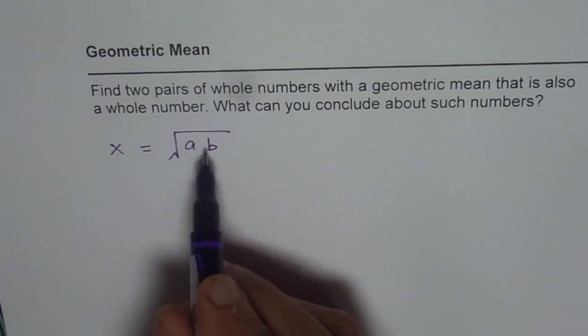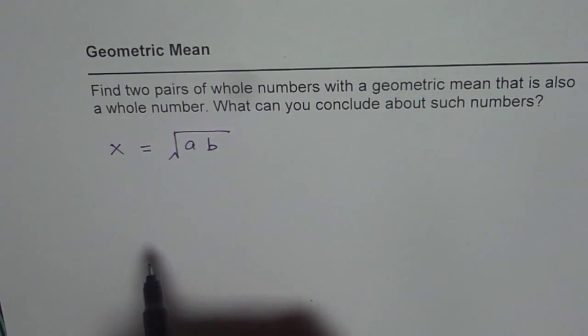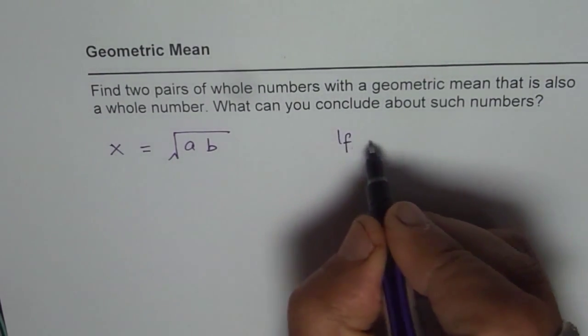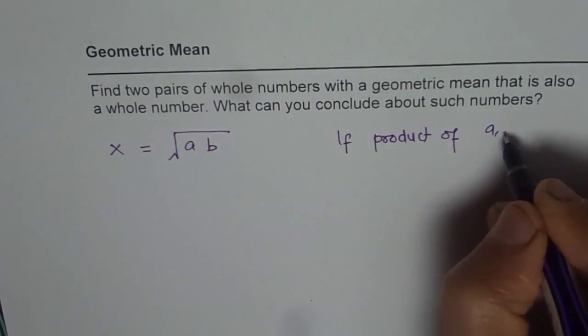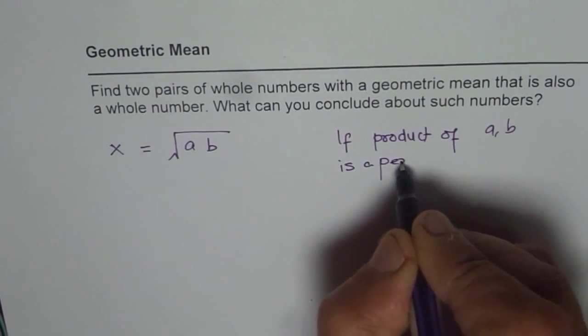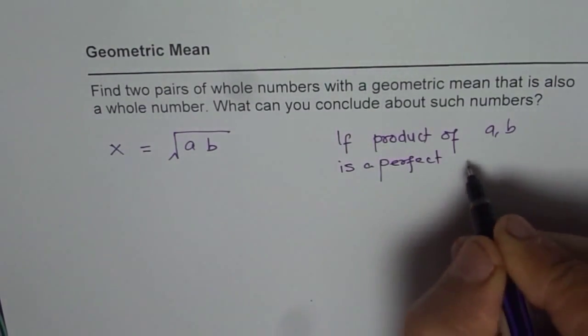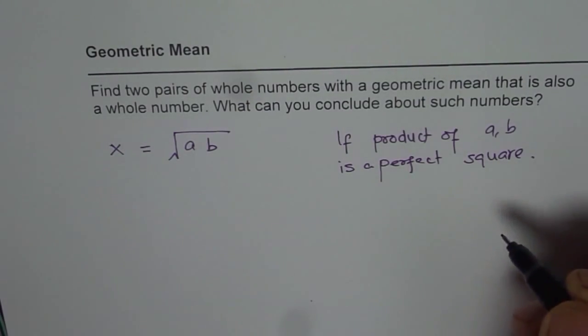Now we can get a whole number from this if product of a and b is a perfect square. So if product of a and b is a perfect square, then we will get a whole number. So that way we can select a lot of numbers.